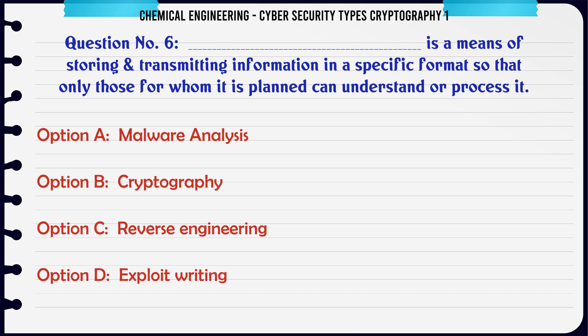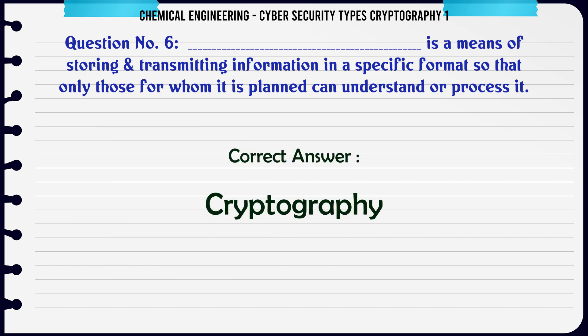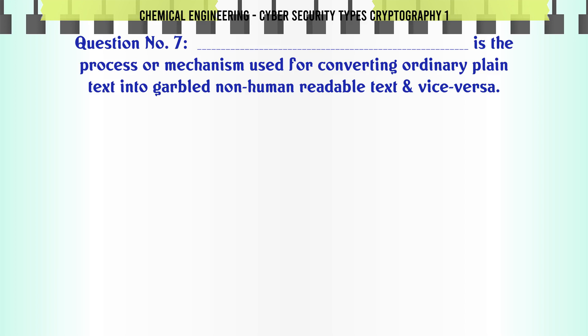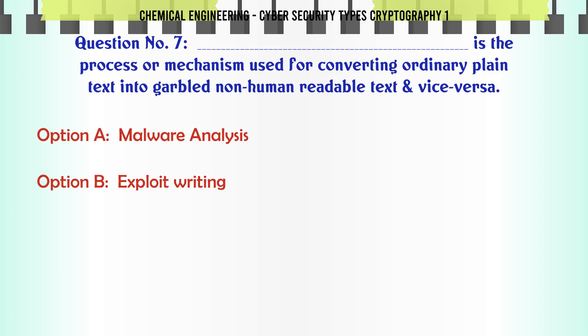The correct answer is Conventional. Which of the following is a means of storing and transmitting information in a specific format so that only those for whom it is planned can understand or process it? A) Malware analysis, B) Cryptography, C) Reverse engineering, D) Exploit writing.